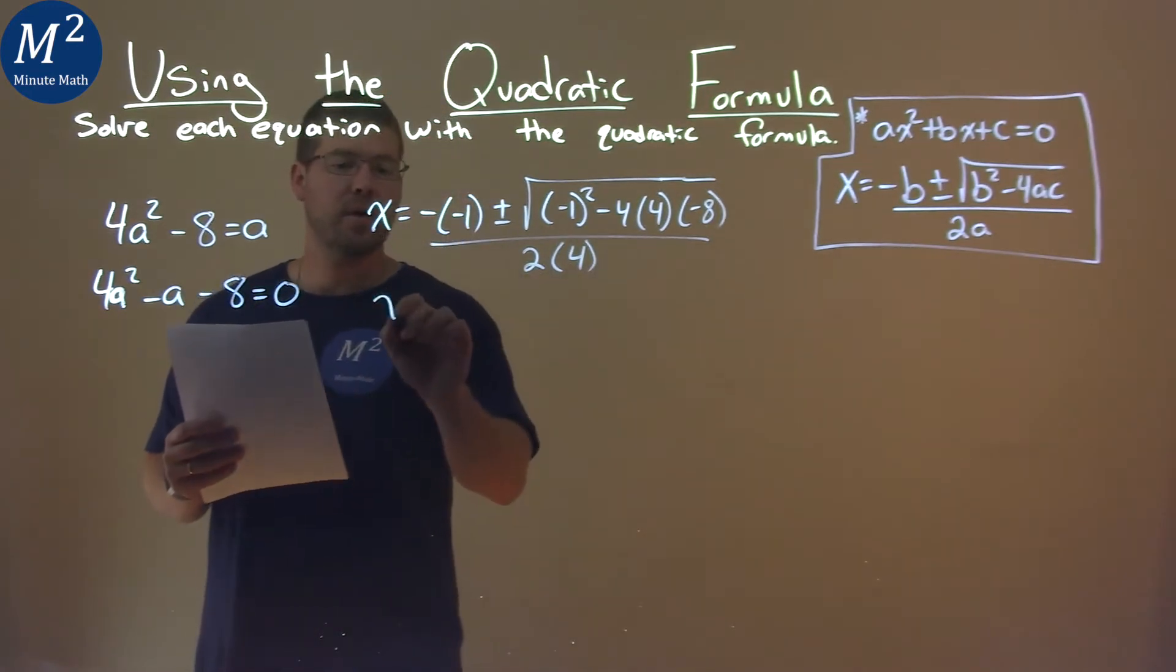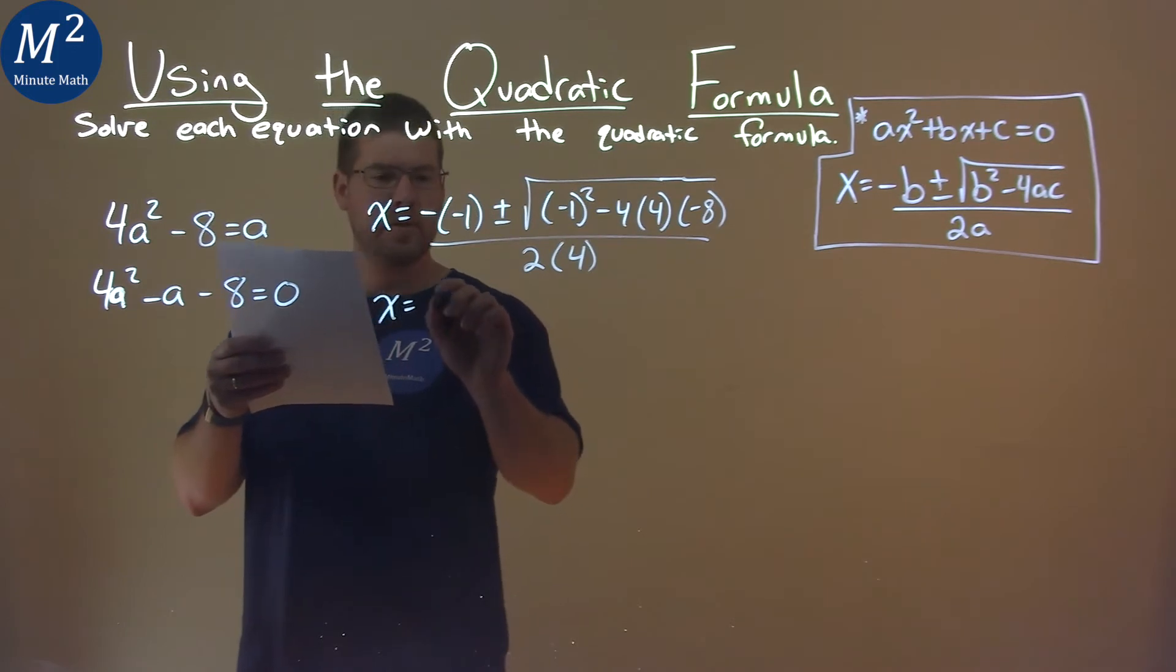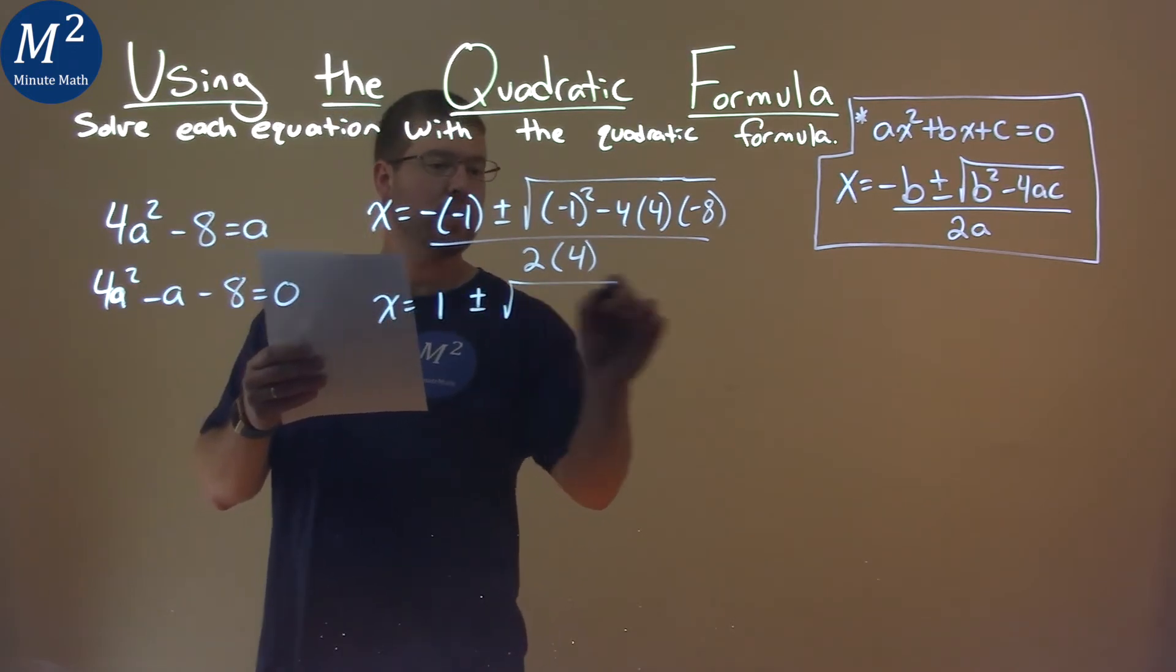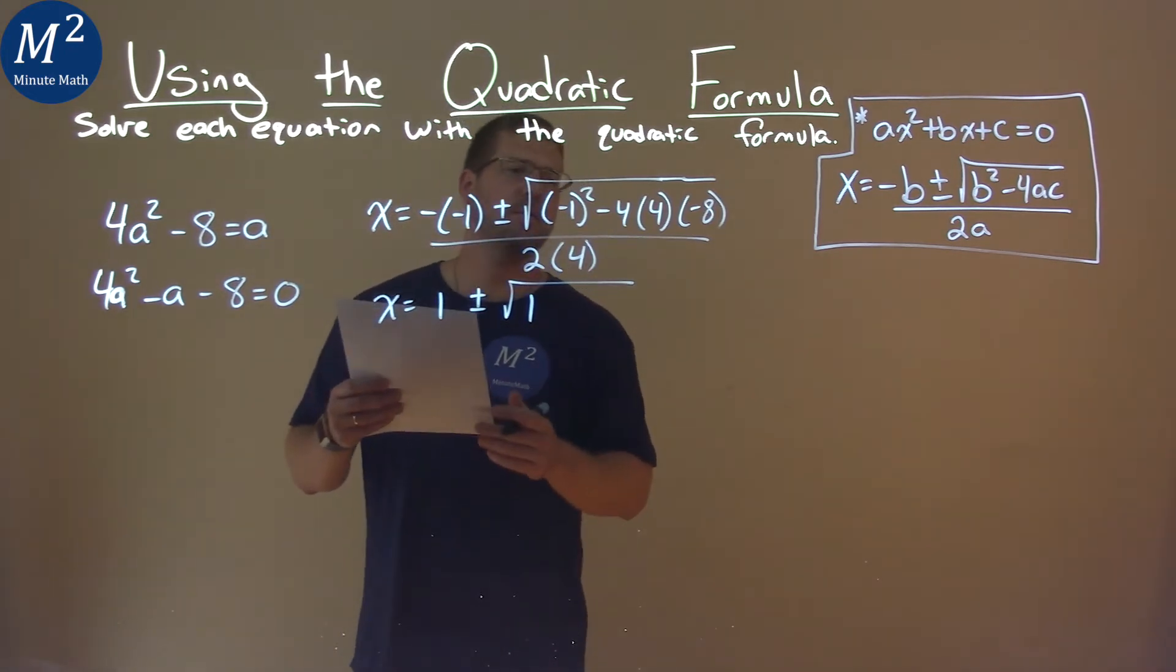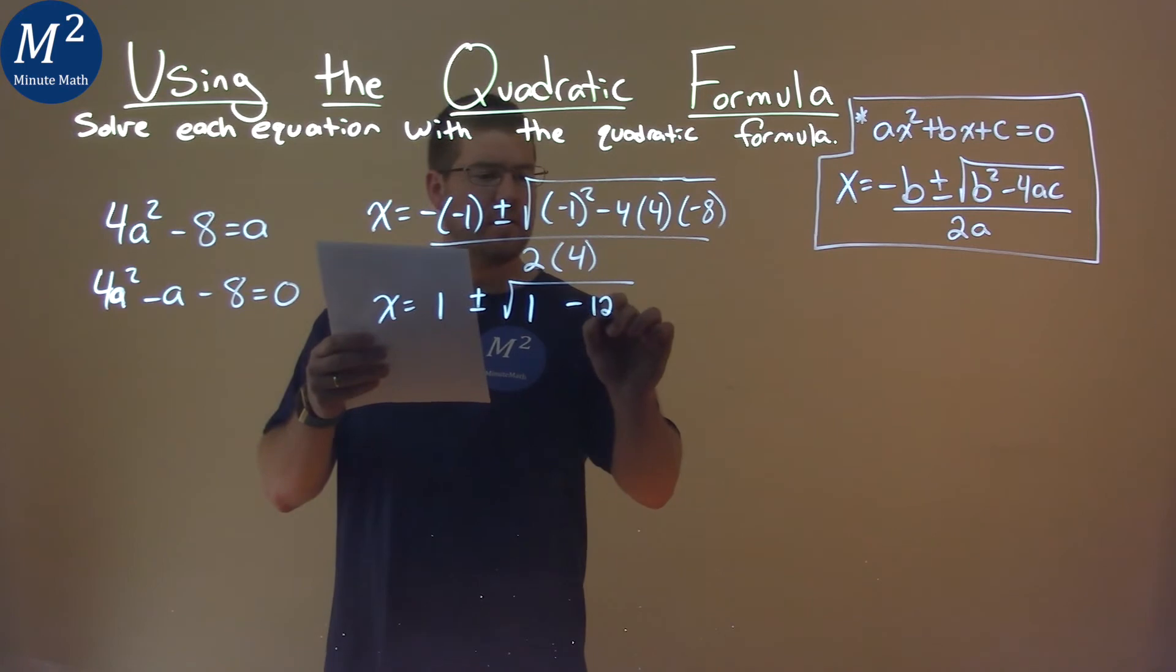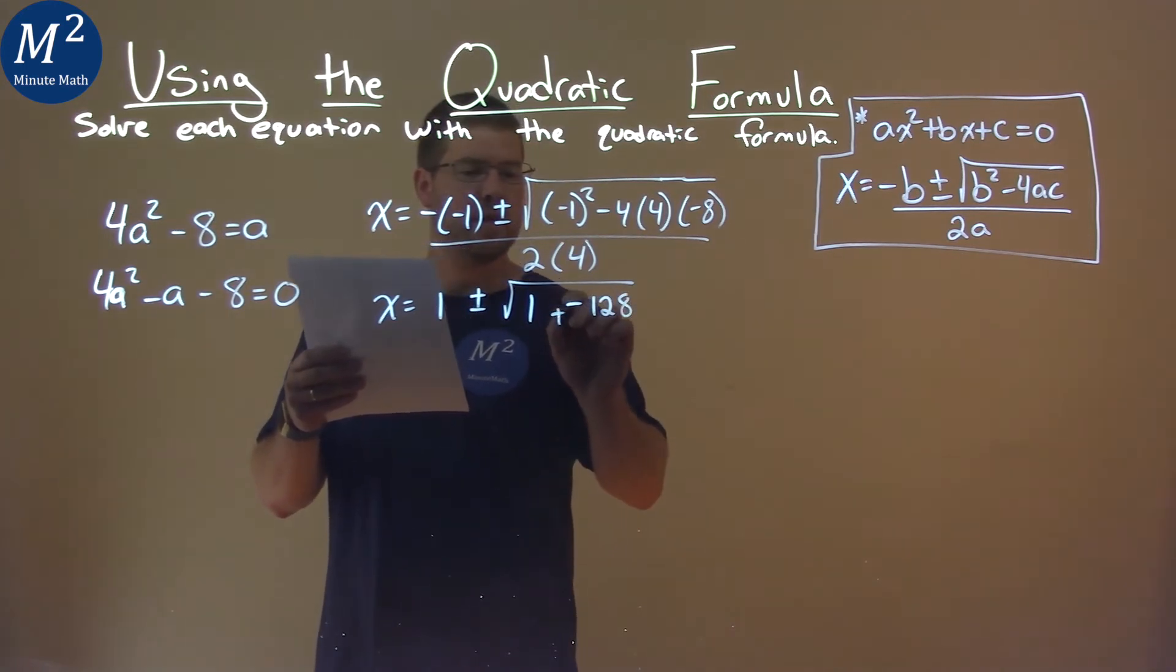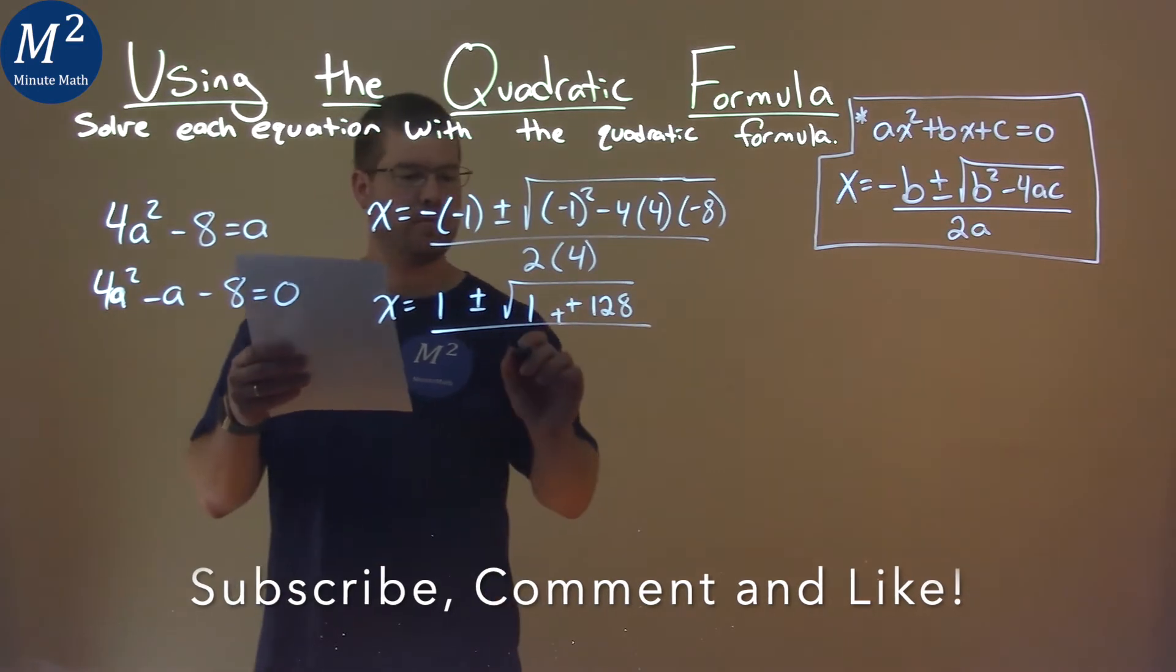So, keep on going. Negative negative 1 is a positive 1, plus or minus the square root, well, negative 1 squared is also a positive 1. And 4 times 4 times negative 8 is a negative 128, but we're subtracting that. Two negatives make positive there. And then all over 2 times 4, which is 8.